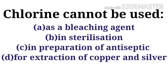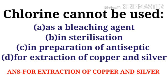Chlorine cannot be used for — options are: option A as a bleaching agent, option B in sterilization, option C in preparation of antiseptic, option D for extraction of copper and silver. The correct option is option D: for extraction of copper and silver.